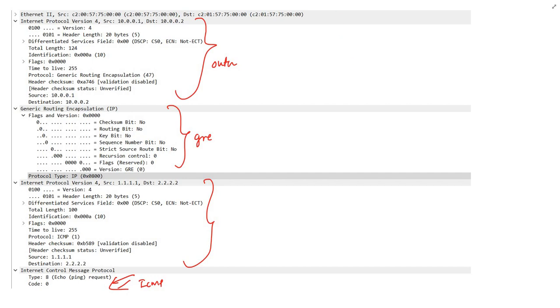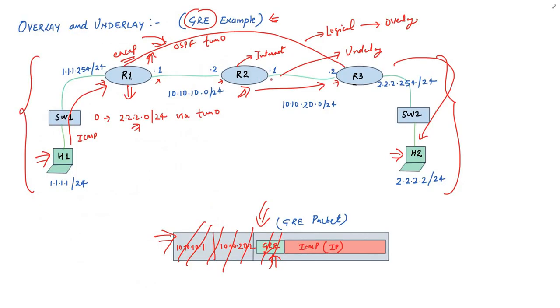Here, the IP network between R1, R2, and R3 is the underlay network. It can have other redundant paths also to make underlay more robust. For example, a router R4 can be inserted here for multiple paths between R1 and R3.